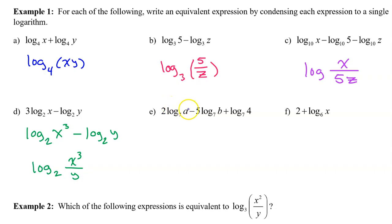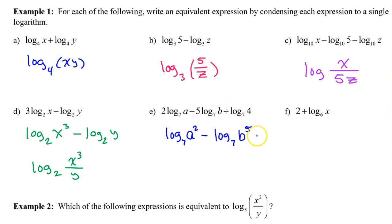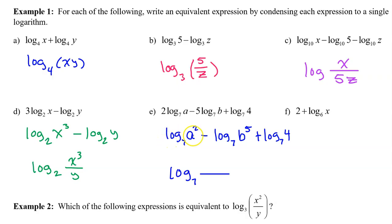This 2 in the front needs to be moved to the exponent before I can rewrite as a single log. So we will have log base 7 of a squared minus, we will move this 5 to the exponent, so we will have log base 7 of b to the fifth power. This one doesn't have anything in the front, so I can just put log base 7 of 4. Now I can rewrite these all as a single log base 7. The fact that there is a minus sign involved means that we will have a quotient. The first term is positive, so a squared will be in the numerator. The second term is negative, so b to the fifth power will end up in the denominator. The third term is positive, so the 4 will end up in the numerator.